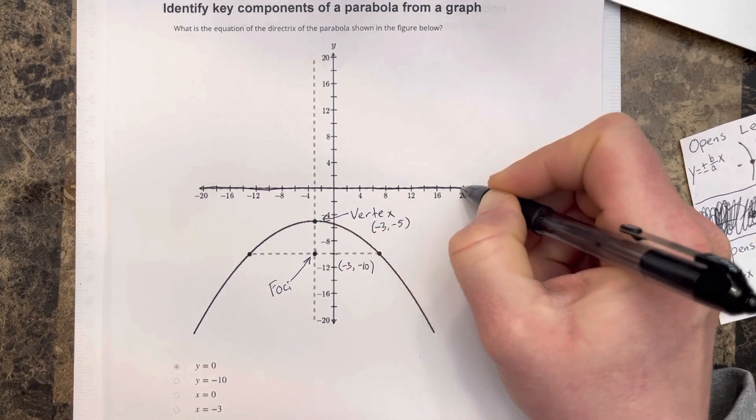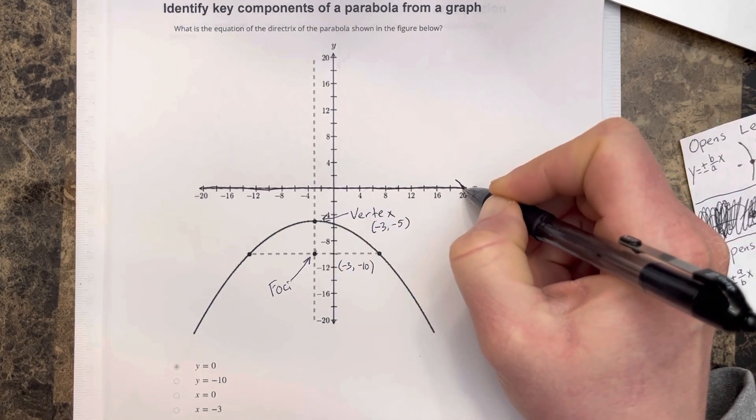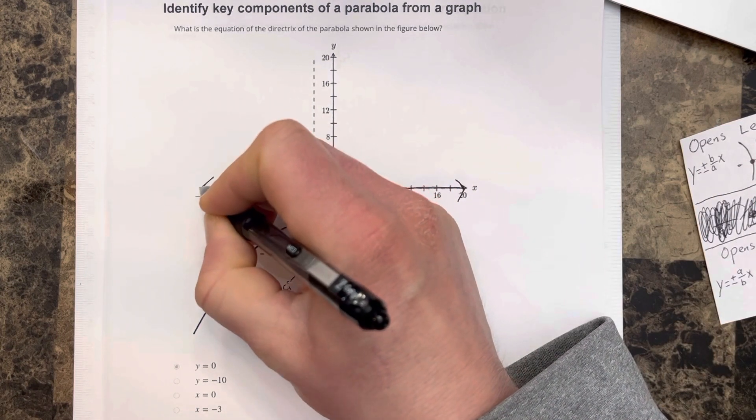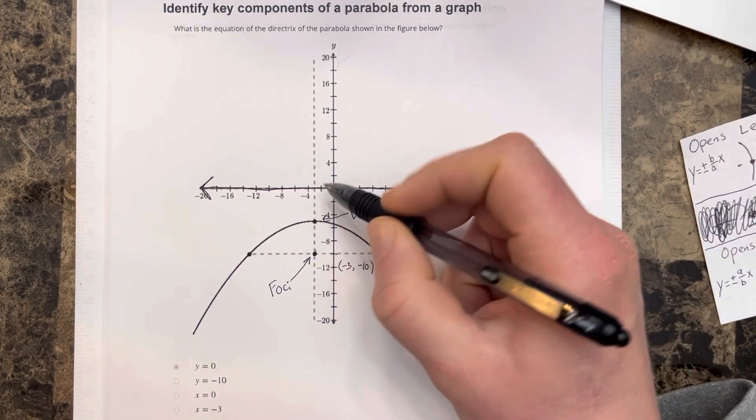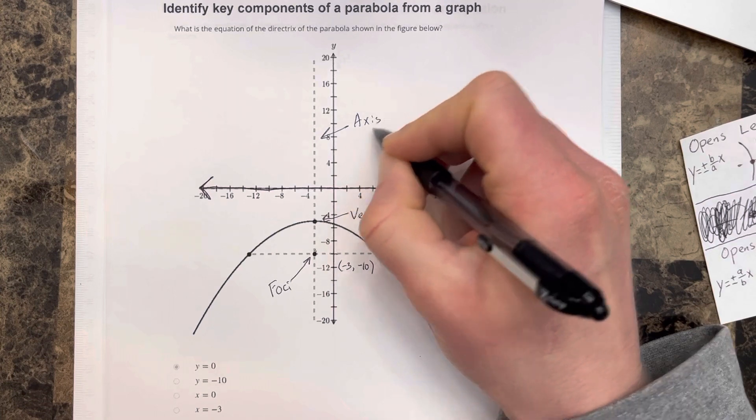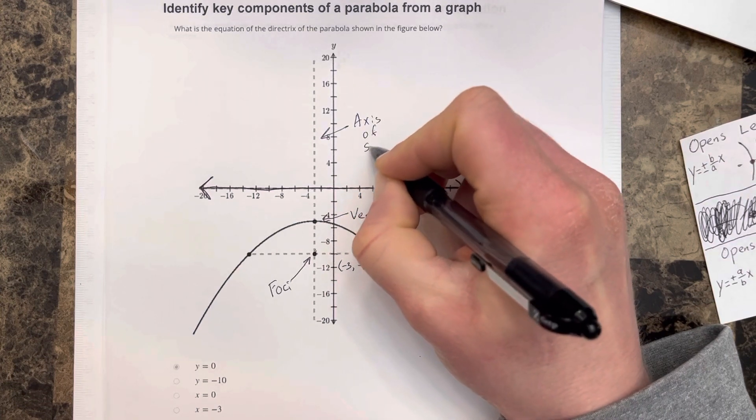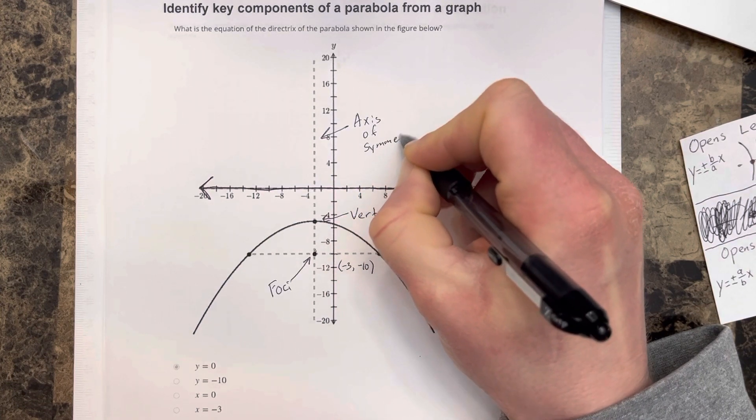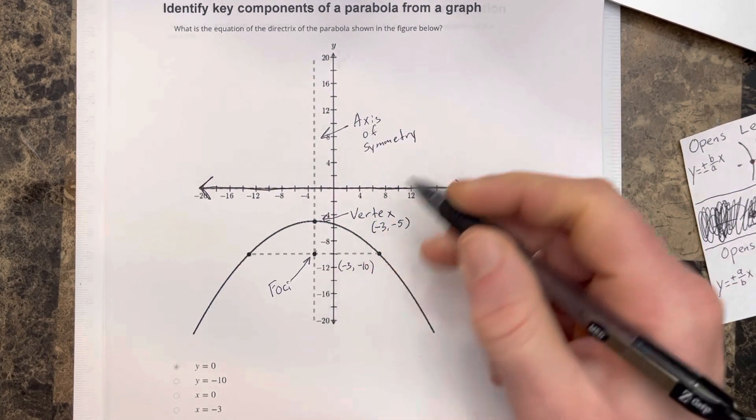Now, typically you put a dashed line, but because we're on the x-axis, I wanted to make sure you could see this. It's perpendicular to what's called the axis of symmetry, which separates the parabola into two reflective halves.